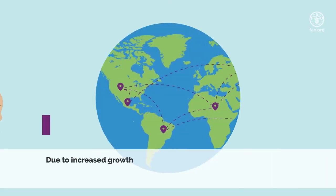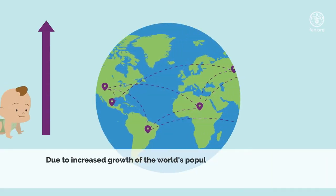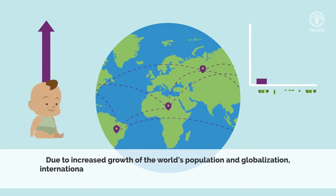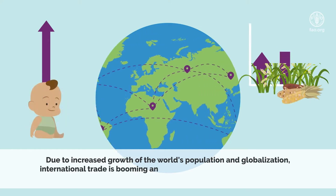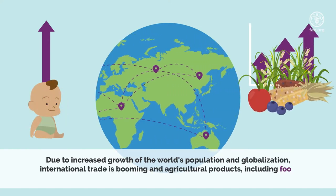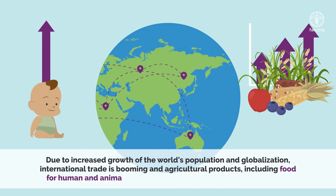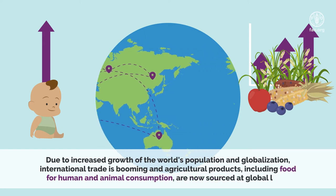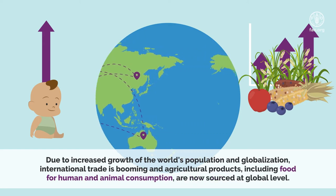Due to increased growth of the world's population and globalization, international trade is booming, and agricultural products including food for human and animal consumption are now sourced at a global level.